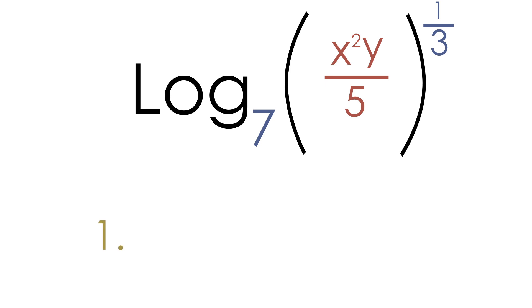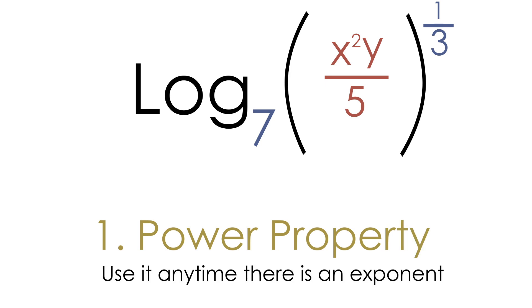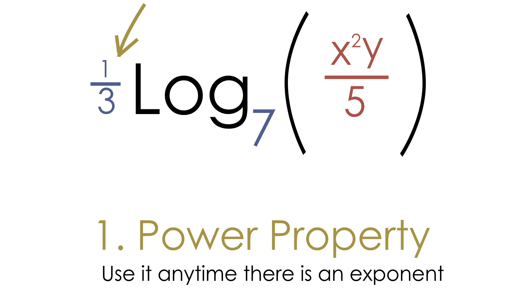This brings us to our first property of logs: the power property. Any time you see an exponent on top of a log, you can move that exponent to the front and multiply it with the log — it is exactly equal. So we're going to take our one-third exponent and move it to the front, giving us one-third times the log base seven of x squared y over five.